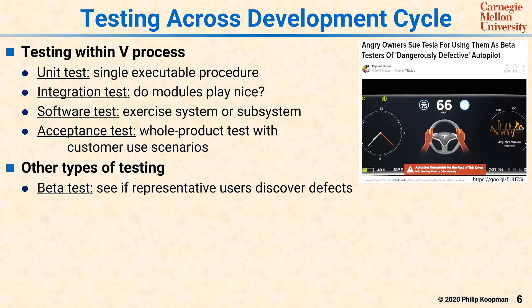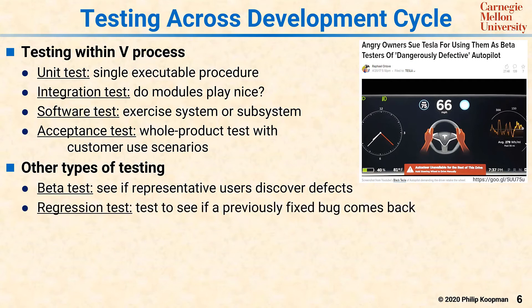Regression testing is an approach to testing to see if a previously fixed bug comes back. This means that every time you fix a bug, you create a test to make sure that bug was actually fixed, and then you run it every time you touch the software to make sure that a previously known bug didn't come back to bite you.